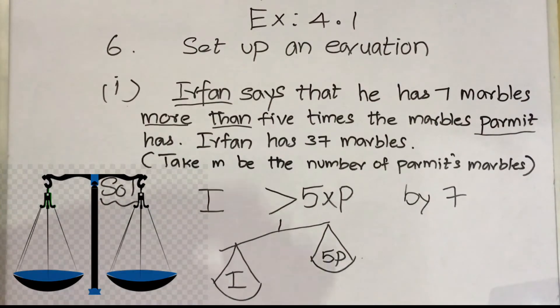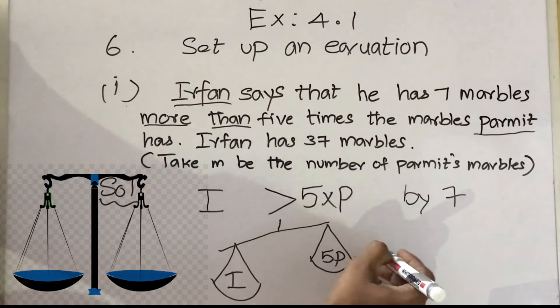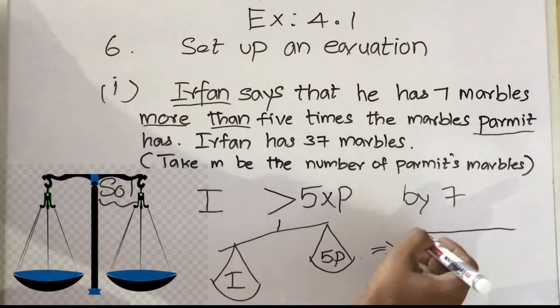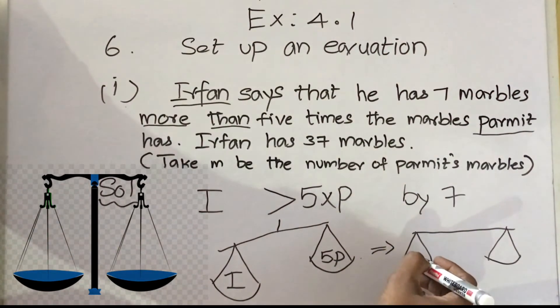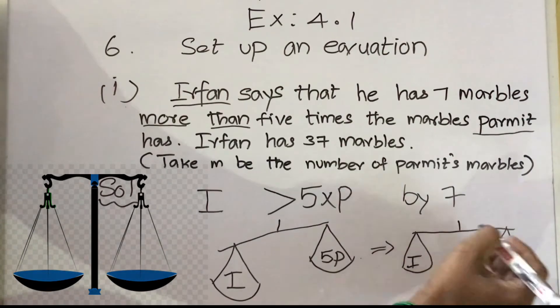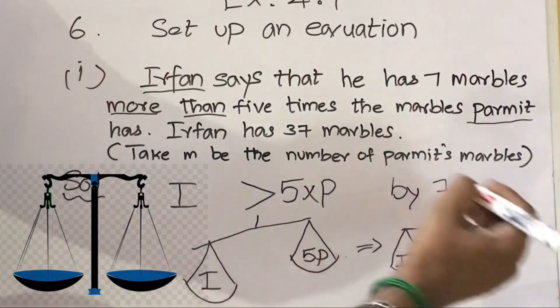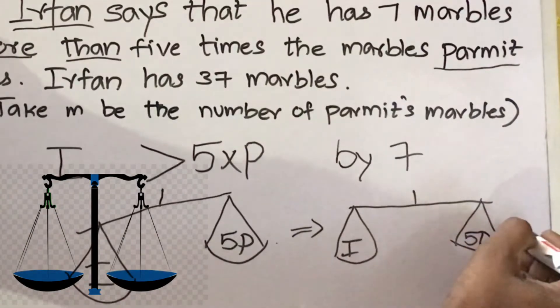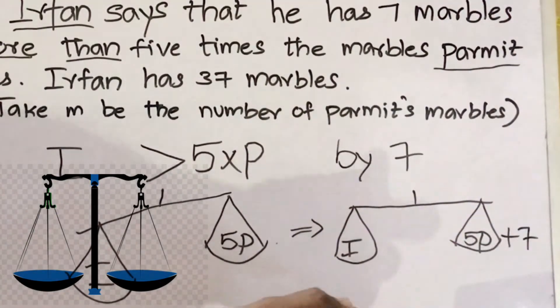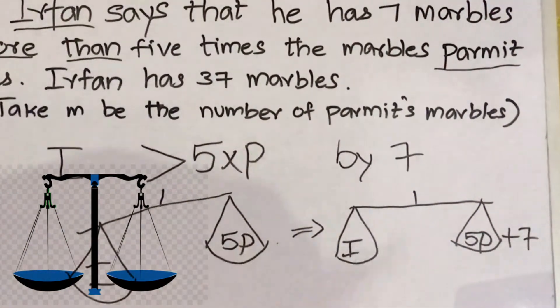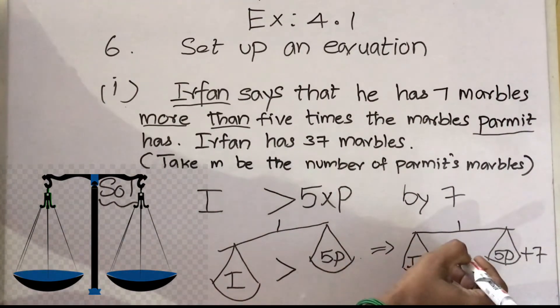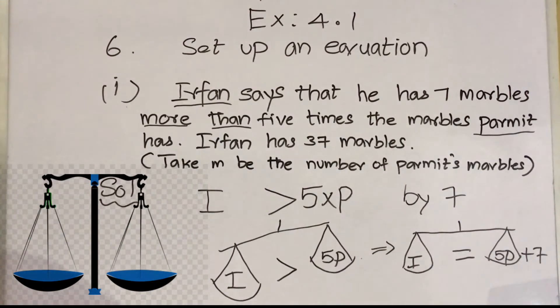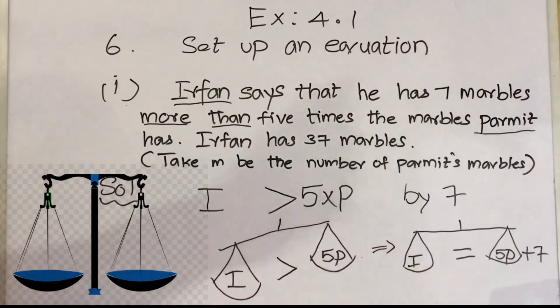Next step: automatically the two pans are balanced. 5P + 7. If you add seven marbles to the lesser side, the lesser pan, then automatically it is balanced. Now the sign changes to equal to. We formed the equation.